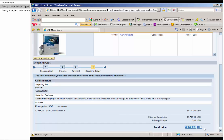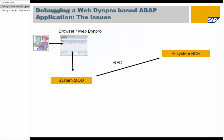We are lucky that we know the application and also know where to set a breakpoint. Here is the WebDynpro application. The backend system is MOD. When you press the Confirm button, an RFC is executed in the Booking System BCE. So we need to set an external breakpoint in the RFC module of the Booking System BCE to stop.